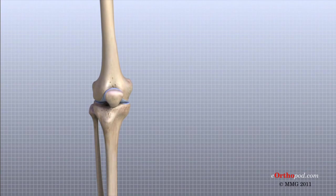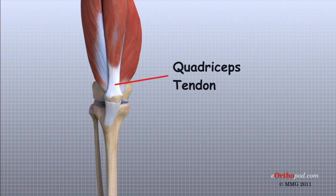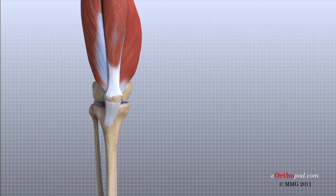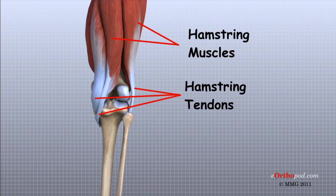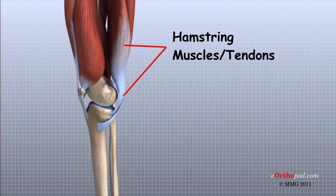Tendons are similar to ligaments, except that tendons attach muscles to bones. The quadriceps tendon connects the large quadriceps muscle of the thigh to the patella. This tendon continues across the patella, or kneecap, and blends into the patellar tendon, which connects the patella to the tibia. The hamstring muscles on the back of the thigh also have tendons that attach in different places around the knee joint. These tendons are sometimes used as tendon grafts to replace torn ligaments in the knee joint.